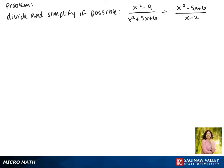Today we'll be dividing the expression x squared minus 9 over x squared plus 5x plus 6 divided by x squared minus 5x plus 6 over x minus 2 and simplifying if possible.